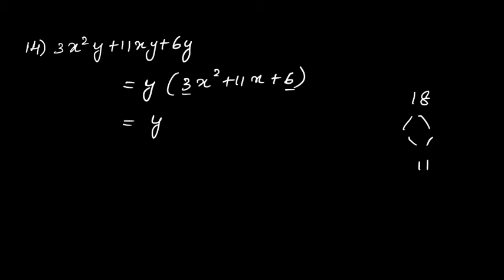The two numbers are 9 and 2. Replace 11x by 9x and 2x, so we get 3x²+9x+2x+6.